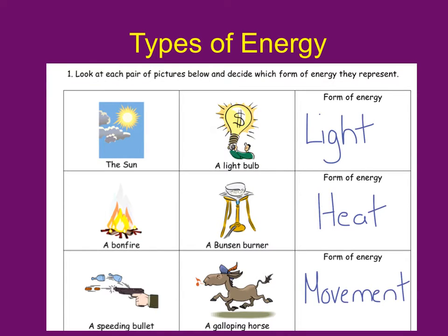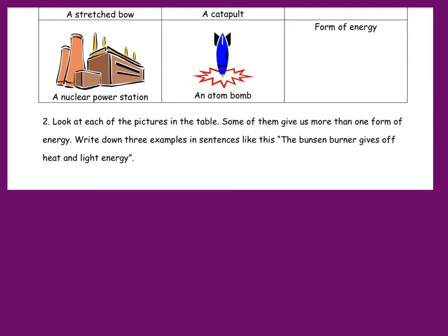Pause the video, finish off your worksheet nice and neatly just below today's date and title. Notice that there is a number two in the worksheet — you're asked to look at each picture in the table, and some of them give us more than one form of energy. Write down three examples in sentences. The first one to copy into your notes is: the Bunsen burner gives off heat and light energy. Now think of two more examples and write a sentence for each. You're going to submit this work so I can see your worksheets and your sentences.